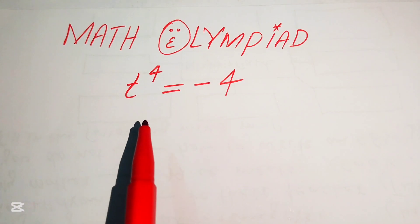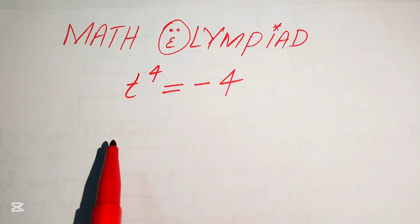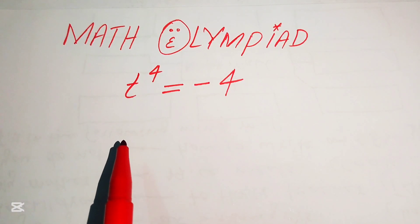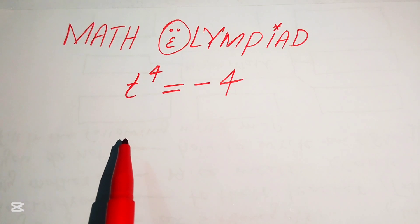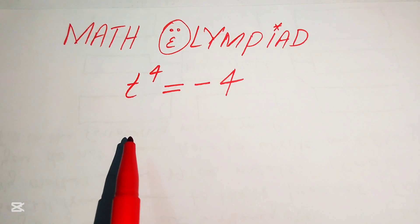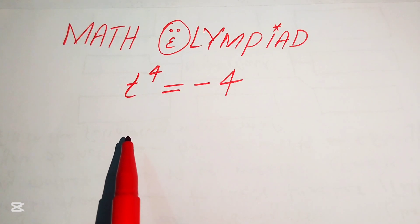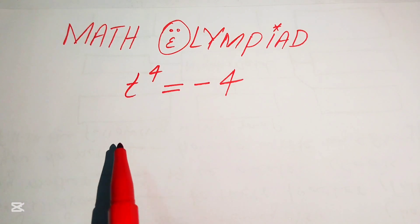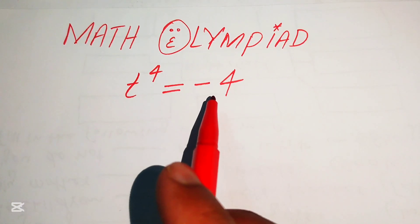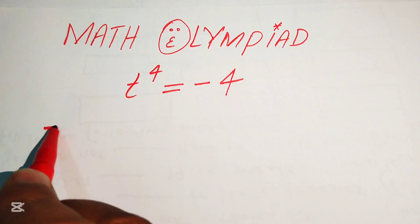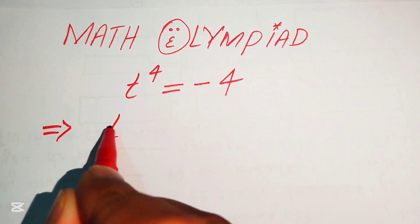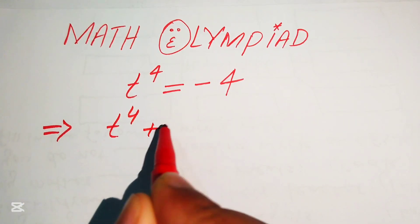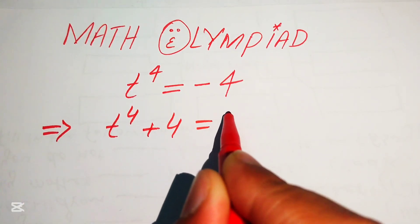This is a fourth-order equation, which means it has four roots — real or complex, it does not matter. We need all four roots. The first step is to move the minus 4 to the left-hand side, giving us t to the power of 4 plus 4 equals 0.